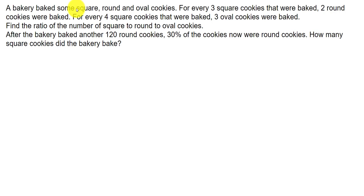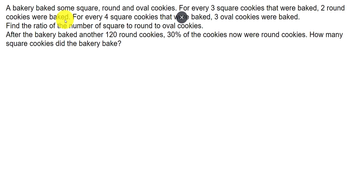A bakery baked some square, round, and oval cookies — three types of cookies. For every three square cookies that were baked, two round cookies were baked. So the ratio of square cookies to round cookies is 3:2.